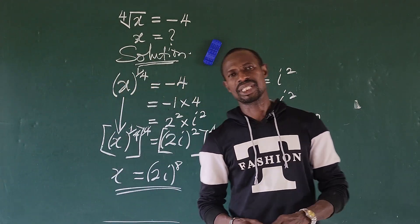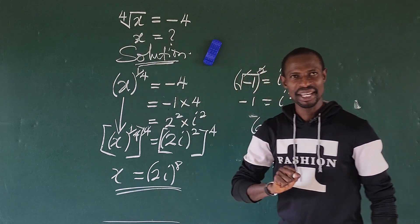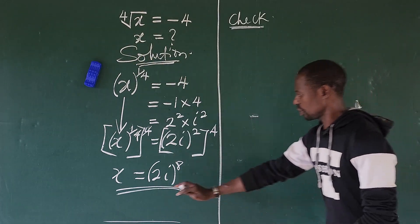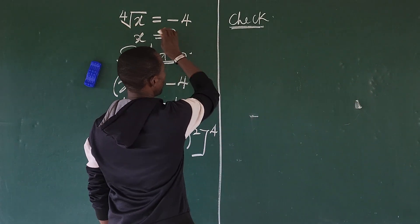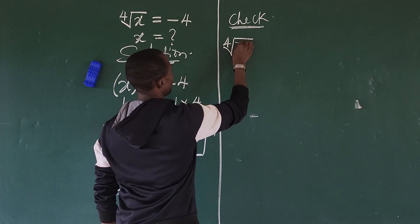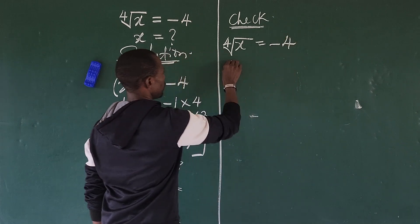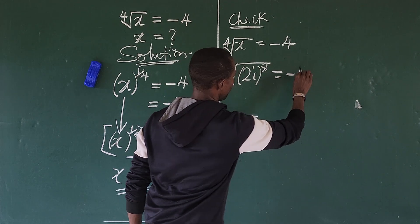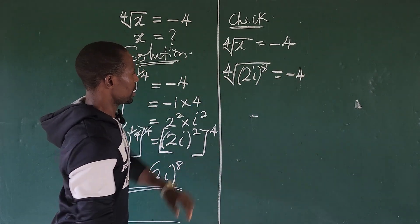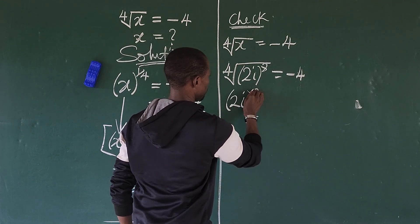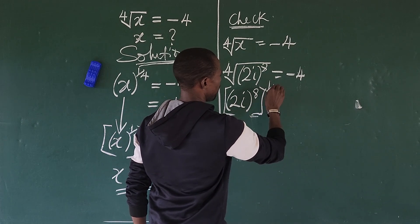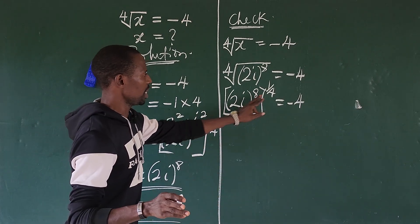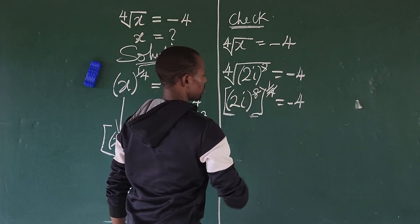That is the value of x given by this equation. But we could do a simple check to see if this actually satisfies the original equation. We want to put this value back in. So our original equation is the fourth root of x equal to minus four. This gives us the fourth root of two·iota to the power of eight, which equals minus four. Let's rewrite this as two·iota to the power of eight, raised to the power of one over four, equals minus four. Applying the law of indices, we multiply the exponents.